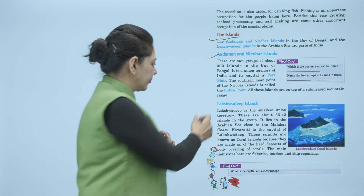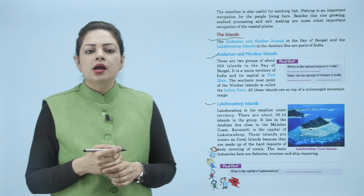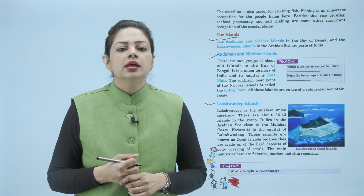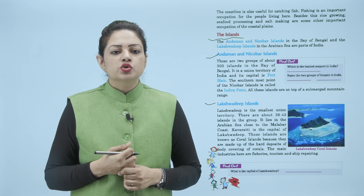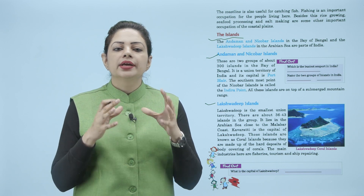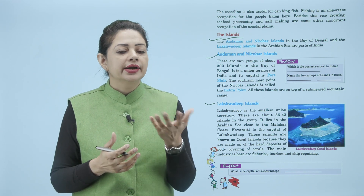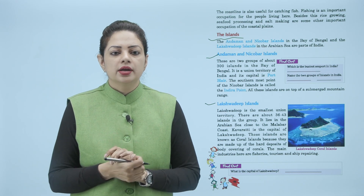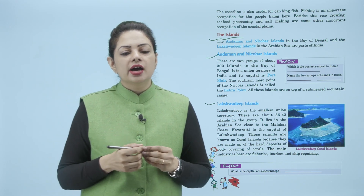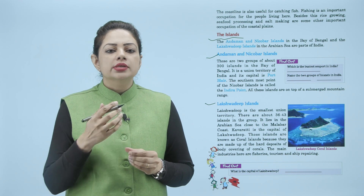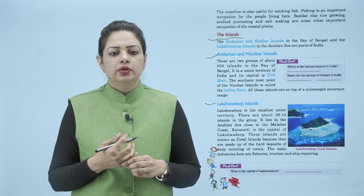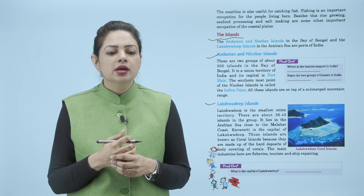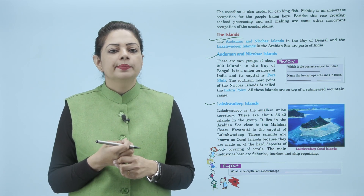Now hum baat karte hain Lakshadweep islands ki. Lakshadweep is the smallest union territory — ek chhoti si union territory hai ye. There are about 36 to 43 islands in the group — yani ye bahut chhota group of islands hai. It lies in the Arabian Sea close to the Malabar coast. Kavaratti is the capital of Lakshadweep.